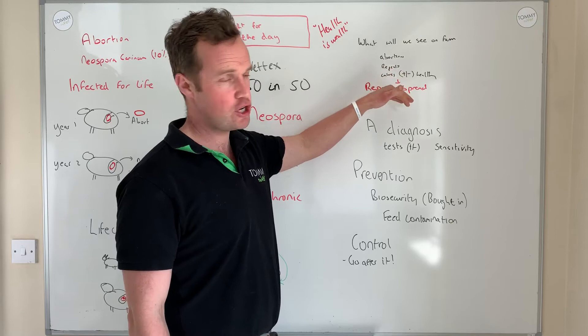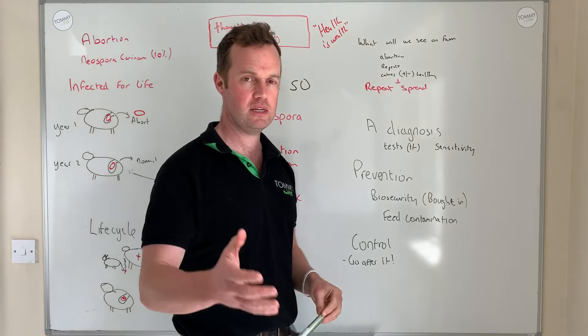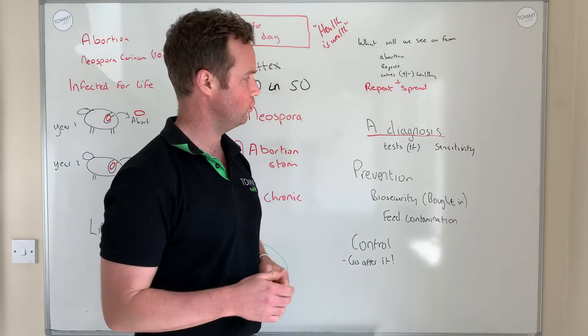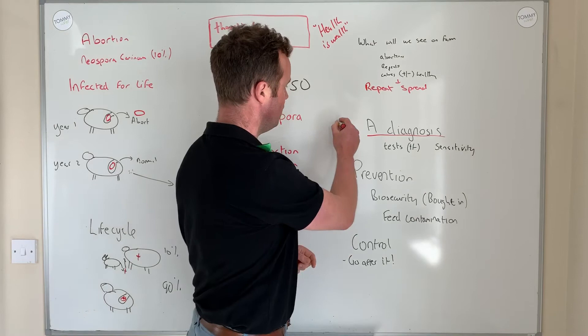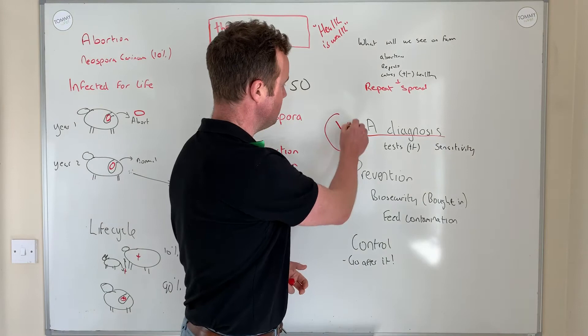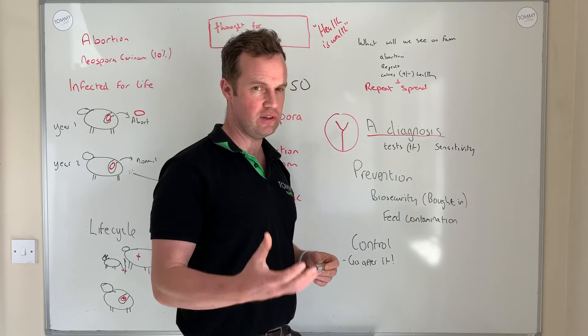Ultimately, with a slower spread, what you'll see through the generations is that positive animals are born into the herd and the cycle continues. Making a diagnosis is really important — for any abortions, we must investigate what's causing them using blood samples and any fetal material we can get to the lab. For routine screening, we can use bloods or milk, and we're checking for antibodies — an immune response to exposure to the pathogen.